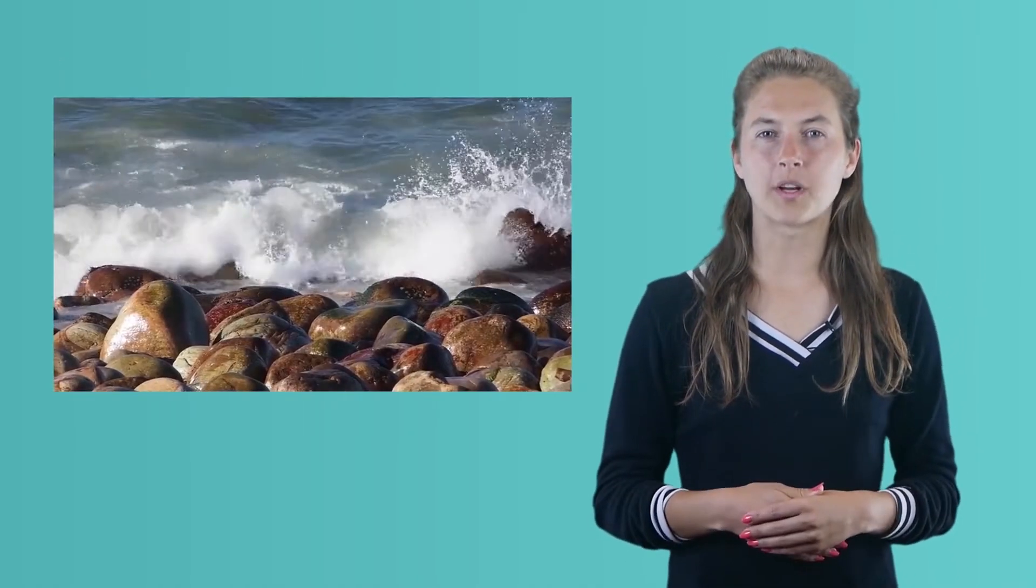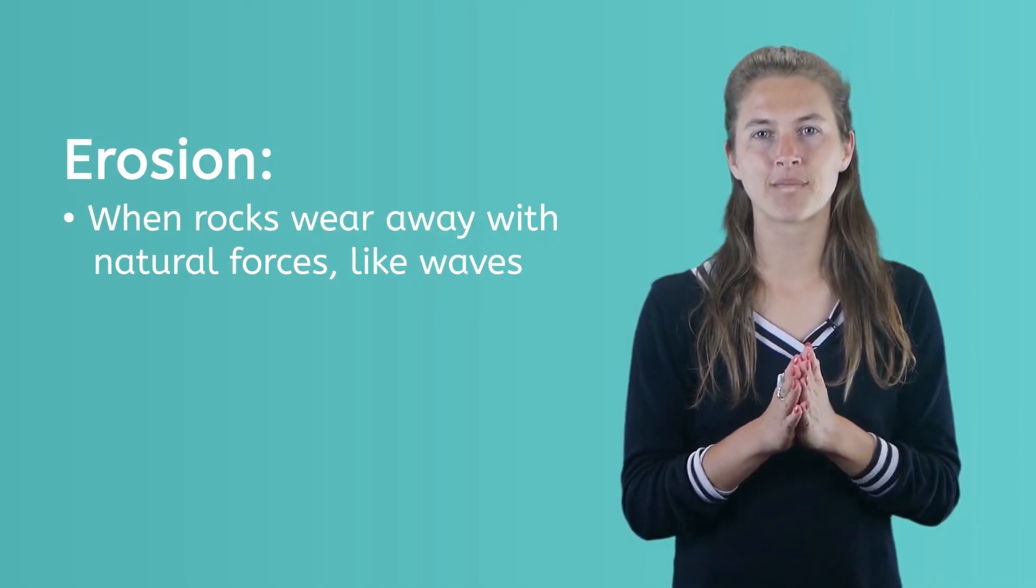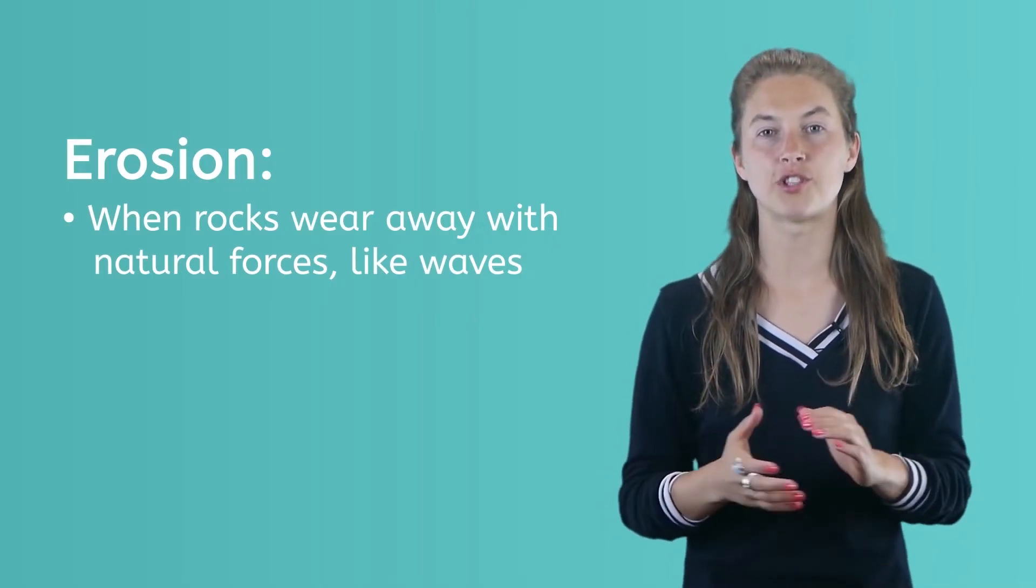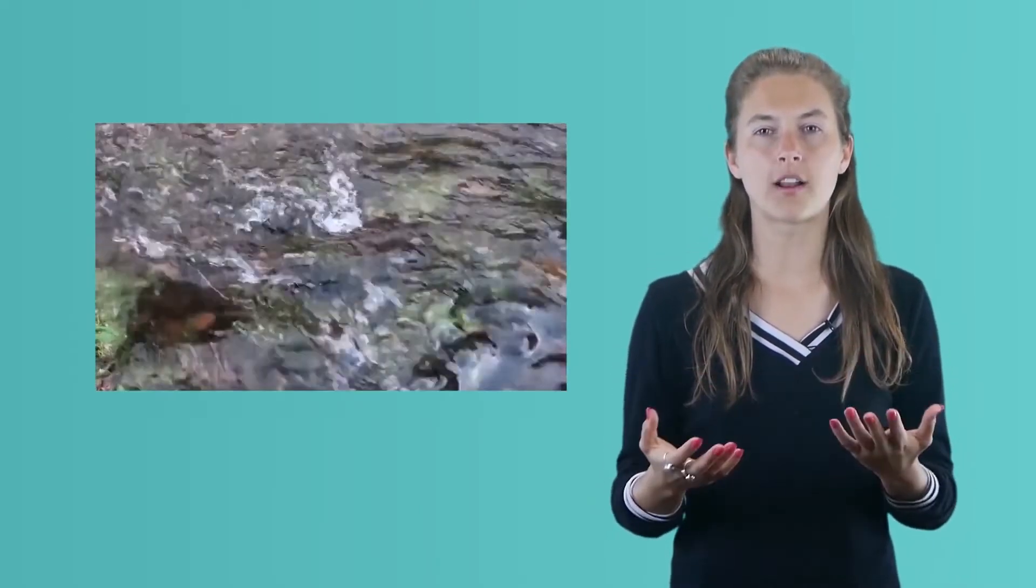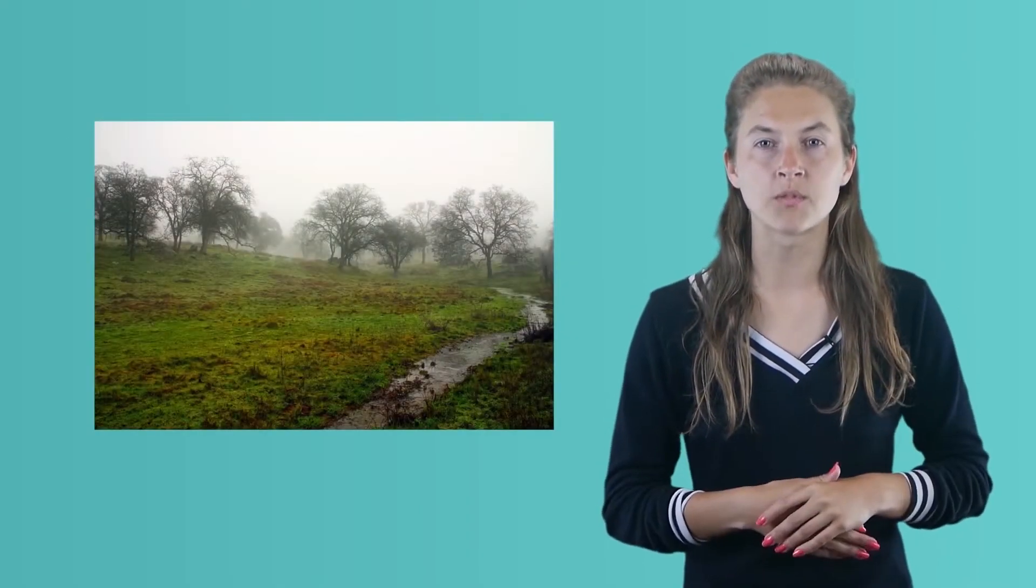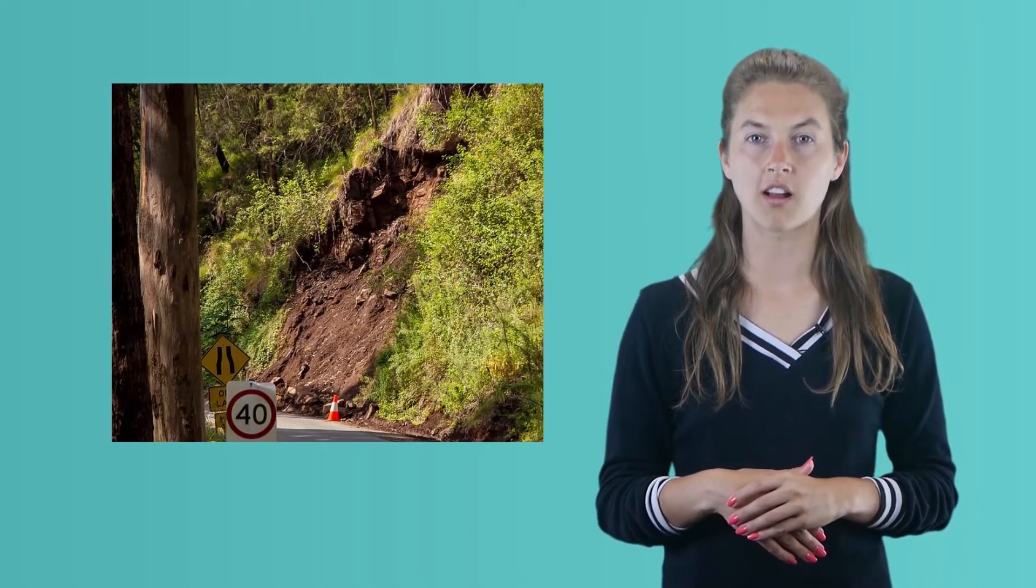When rocks wear away with natural forces like waves repeatedly crashing on the shore, we call this process erosion. Moving water is the most powerful cause of erosion. Riverbanks are eroded by the flowing river water. Gullies are formed when heavy rains wash away soil and fields. Heavy rains can also cause landslides by loosening solid blocks of rock.